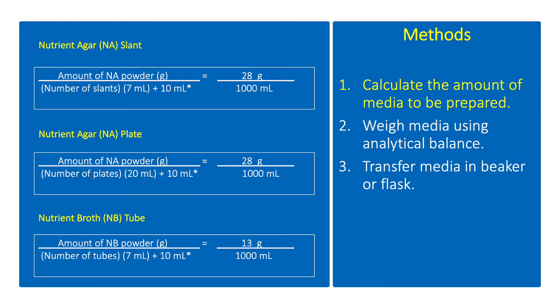The first step is to weigh the media required to make a slant or plate. Calculate the total amount of medium needed based on the actual number of slants or plates to be made. 28 grams per liter is needed for NA while 13 grams per liter is needed for NB. To make one plate, 15 to 20 ml of media is required, while 5 to 7 ml is needed to make a slant. An additional 10 ml is added to the total volume to cover any spillage during the experiment.